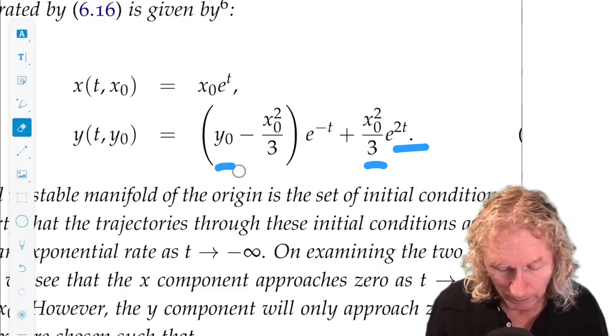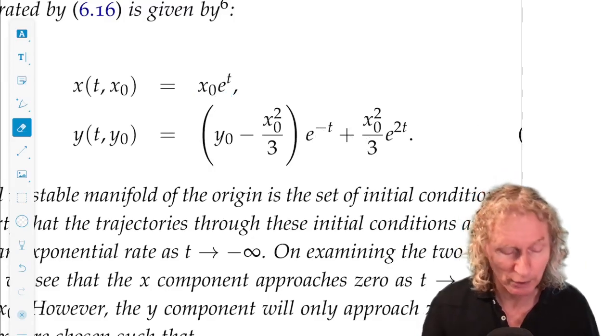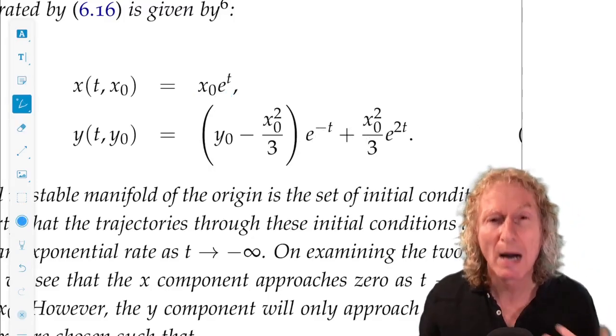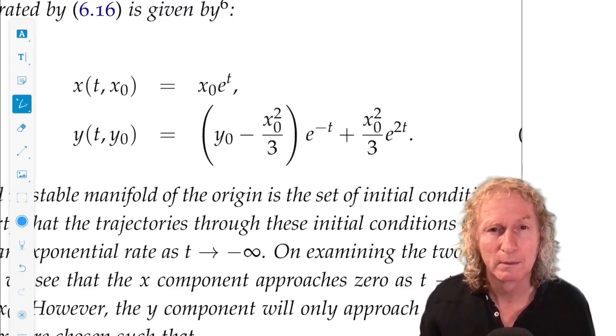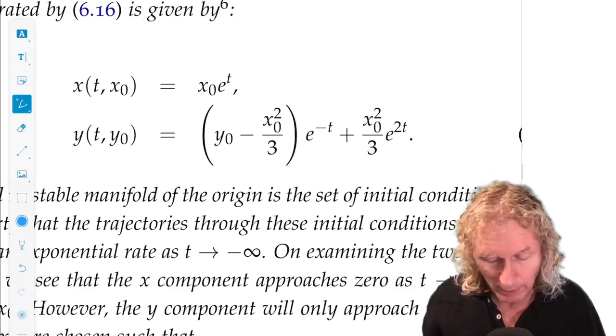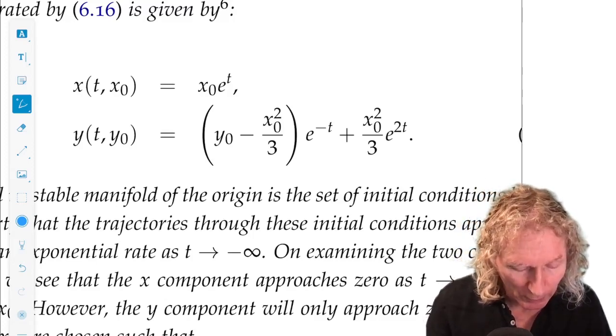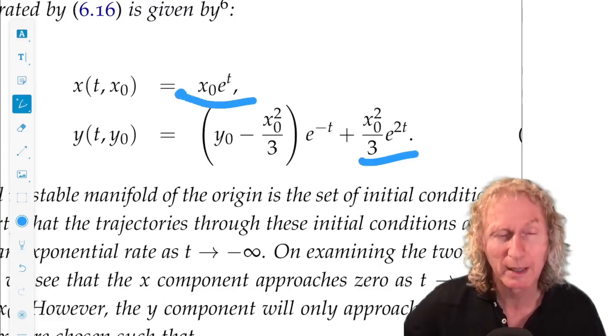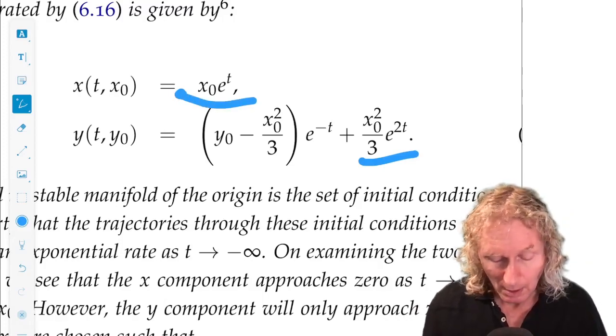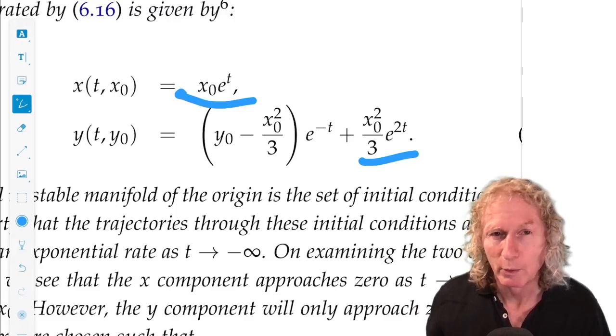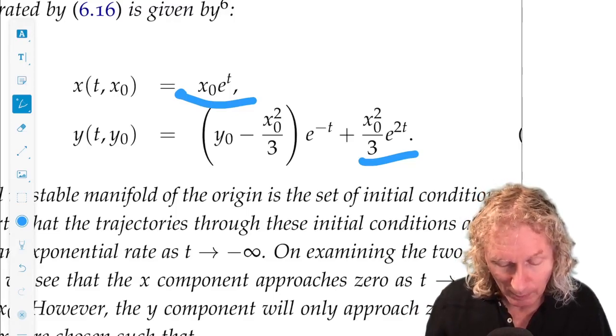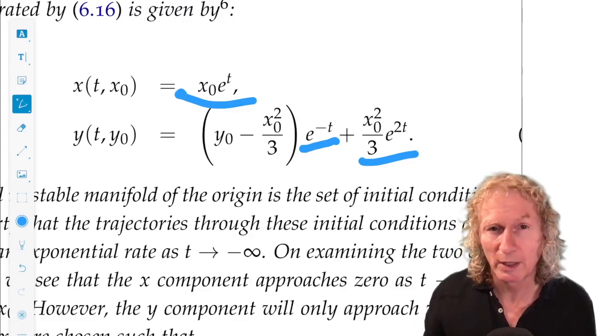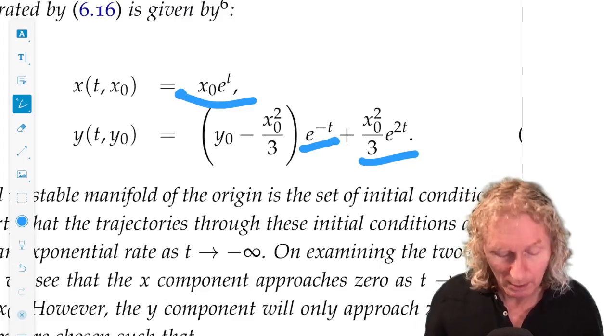Okay. Unstable manifold. These are the set of initial conditions that as time goes to minus infinity, approach the origin at an exponential rate. Well, as time goes to minus infinity, these terms automatically go to zero. So, we don't need to worry about them if we're just concerned with time going to minus infinity. But as time goes to minus infinity, this term blows up. It becomes unbounded.